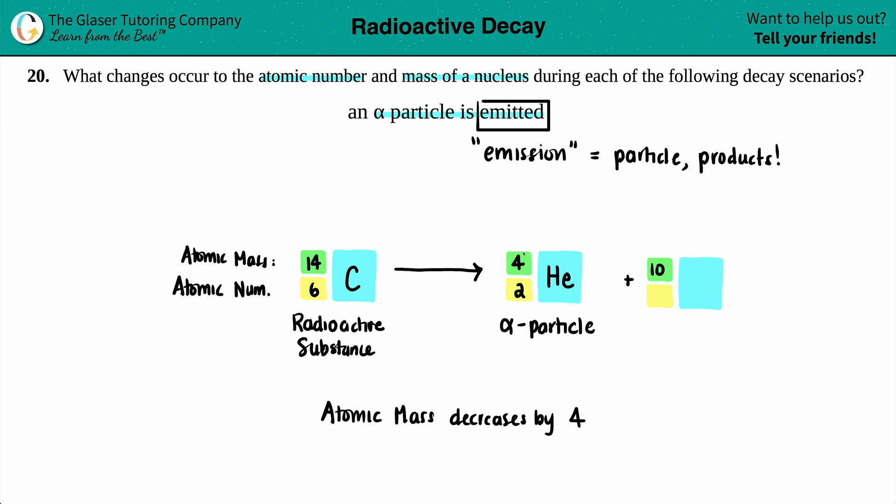Yeah, you got it. The atomic mass decreases by four because the four is going to the helium. And then what's going to happen to your atomic number? Yeah, it's also going to decrease. How much? You got it—two. Because the total of six here, I'm losing two, so this has got to be four. And the atomic number always tells you what the atom is, so a four guy is beryllium in this case.